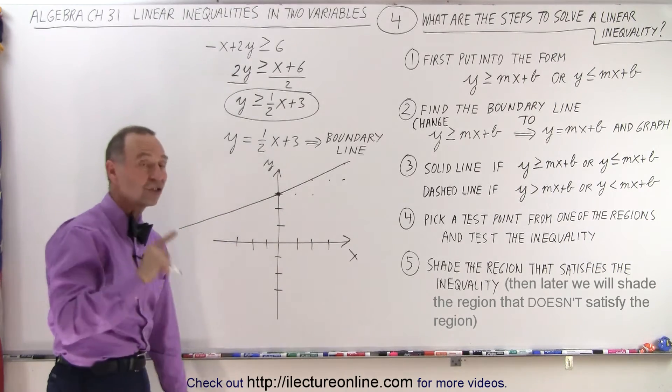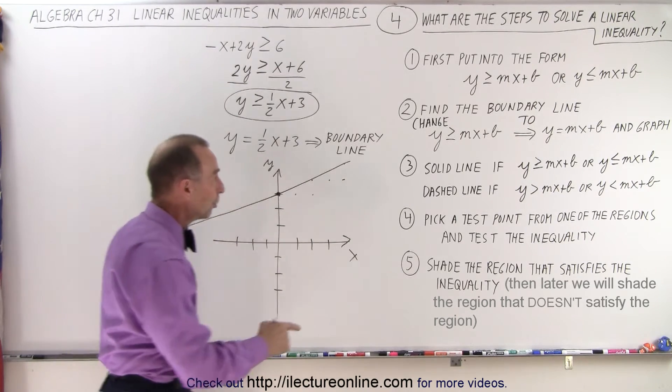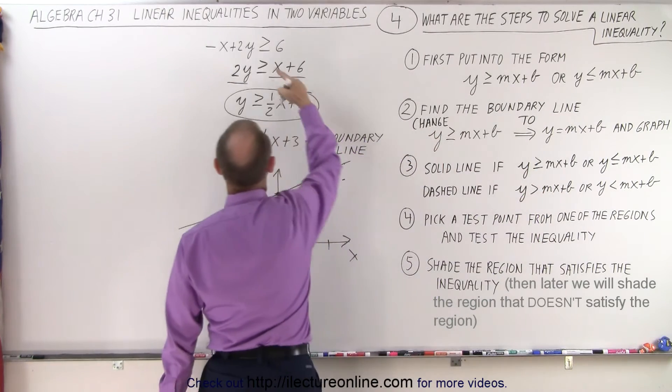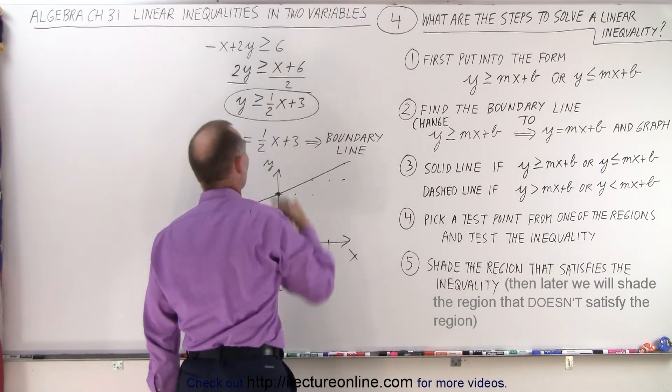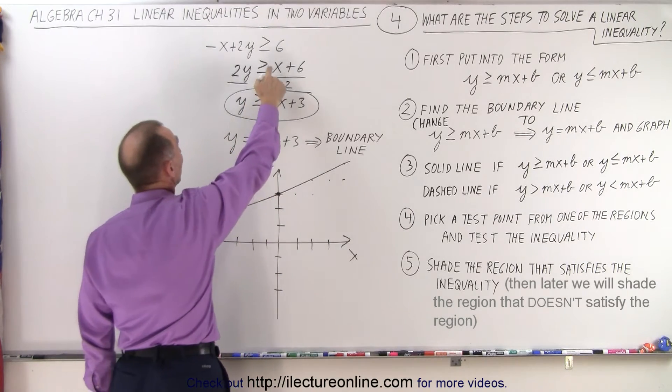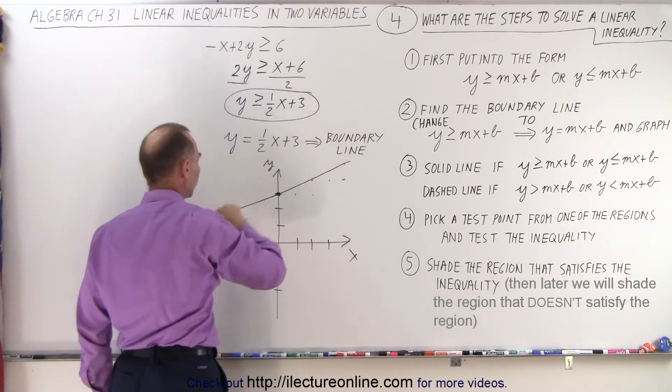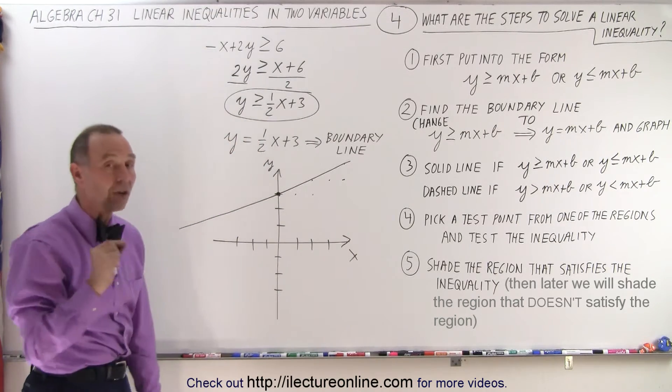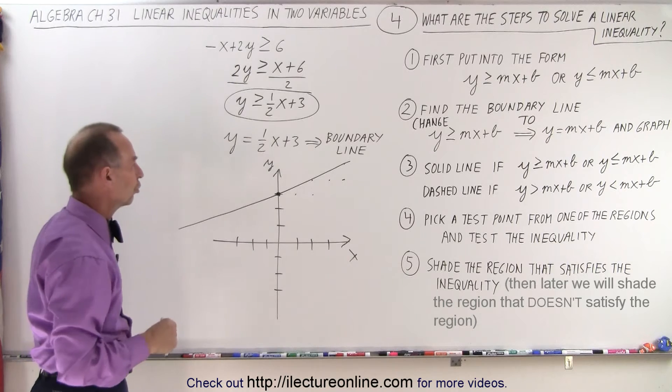And the reason why we drew a solid line, and that's point number 3, if we have the equal symbol as well as the greater than or smaller than symbol in our inequality expression, and in this case we do, it's both greater than or equal to, so we have a solid line instead of a dashed line. That means the points on the line are included in the solution set.